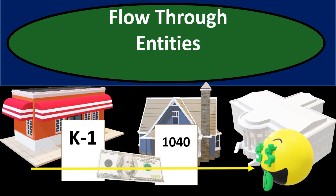In this presentation we will discuss the reporting of taxes for flow-through entities. Flow-through entities are business formations that report income using a K-1 to the owners of the business on their individual Form 1040. Within the Form 1040, the tax on that business income will ultimately flow through to the government, with the tax liability calculated at the individual level.